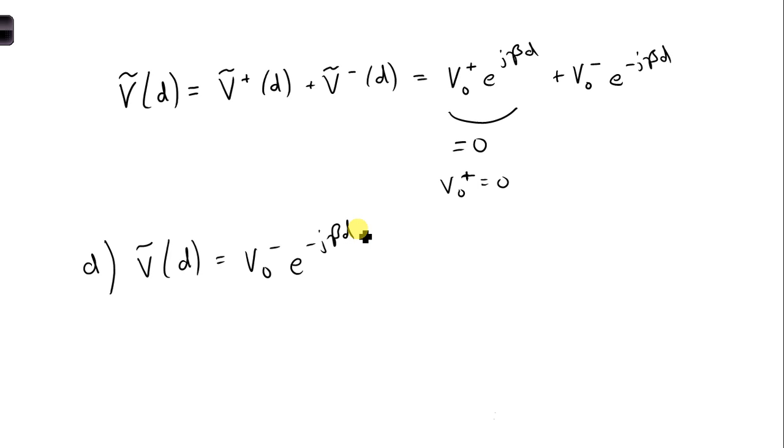And if we compare this to the voltage phasor that's given, and we take out that term, all the rest of it is equal to V0 minus, which in this case is a complex term.